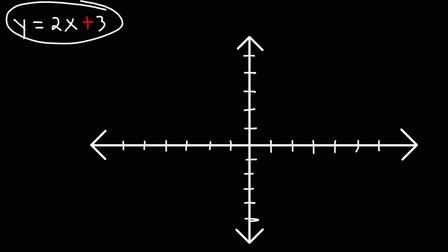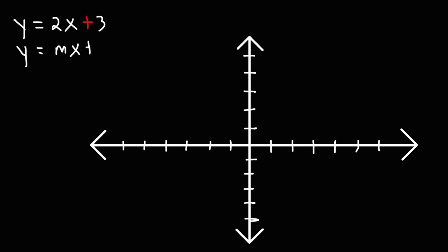What we have here is a linear equation in slope-intercept form. That is, it's in y equals mx plus b format. m, the number in front of x, represents the slope, which is 2 in this example. b is the y-intercept. So in this problem, we see that the slope is 2 and the y-intercept is 3.